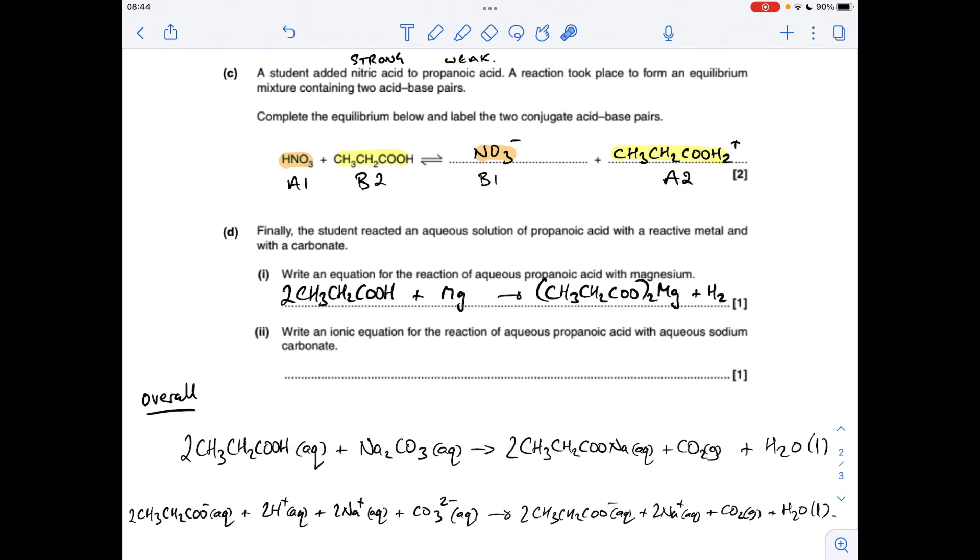So let's extract the ions. Anything that's aqueous, we pull the ions out and show them separately. You've got two propanoic ions, two H plus ions from that. You've got two sodium ions and a carbonate ion from that. Two propanoic ions, two sodium ions from the salt. Carbon dioxide, it's a gas, so we just leave it as it is, and water is a liquid, we leave it as it is.